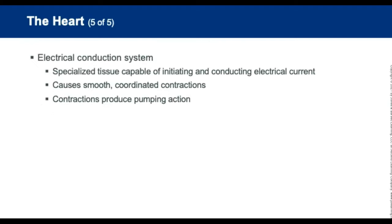The heart has an electrical conduction system — a network of specialized tissue capable of initiating and conducting electrical current. Electrical impulses begin at the sinoatrial node in the atria, travel to the atrioventricular node and bundle of His, then move through the Purkinje fibers to the ventricles. This produces a smooth, coordinated pump action. If the electrical system is injured, the heart will not beat properly.